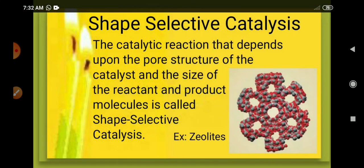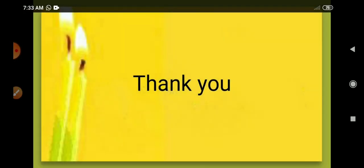How can we define shape-selective catalyst? The catalytic reaction that depends upon the pore structure of the catalyst and the size of the reactant and product molecules is called shape-selective catalysis. An example is zeolites.